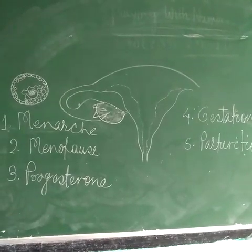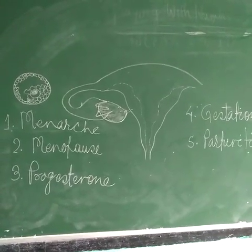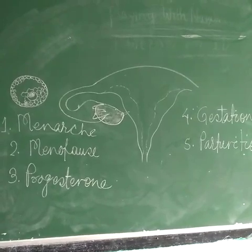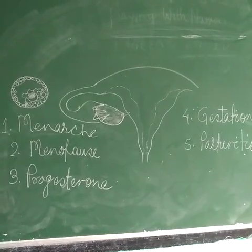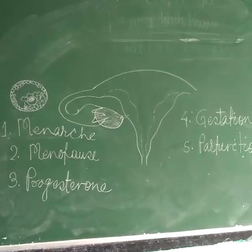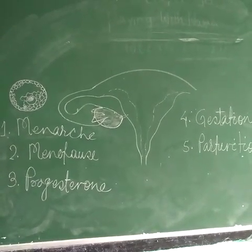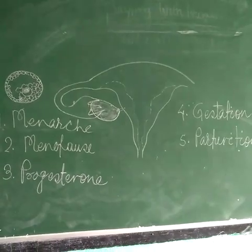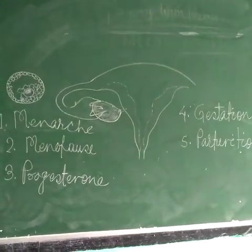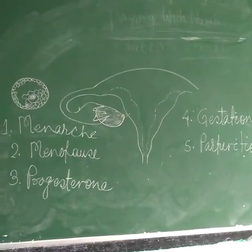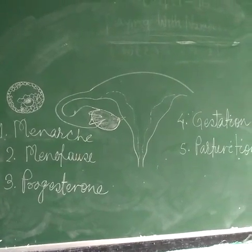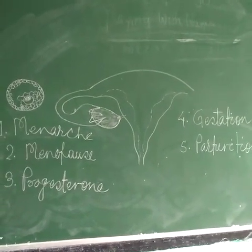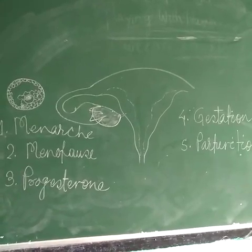Here you can see a diagram of the female reproductive system showing the internal cavity of the uterus along with the fallopian tube and the fimbriae-like structure that encloses the ovary in the female body.